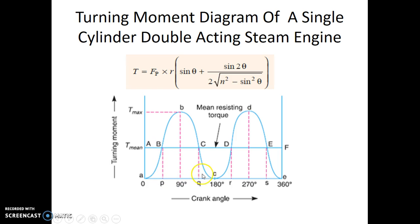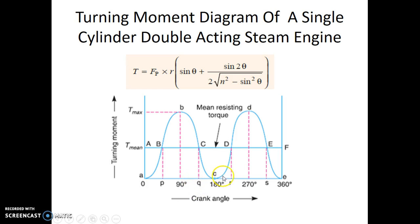For rotation from P to Q, the applied torque is always more than the mean torque, and therefore there is acceleration taking place. During this period of rotation, the angular velocity of the crankshaft keeps increasing and the total kinetic energy of the crankshaft also keeps increasing. Again, during the rotation from Q to R, there is deceleration and therefore a shortage of energy.